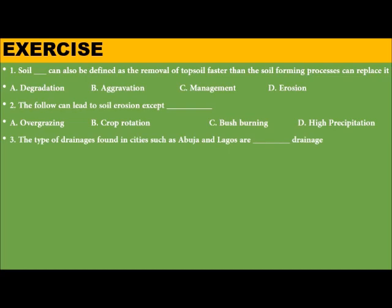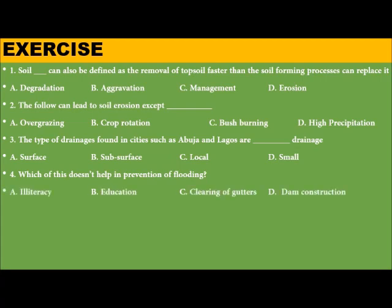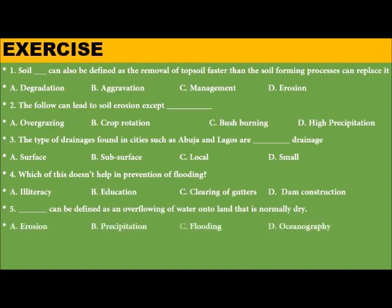Question 3: The type of drainage found in cities such as Abuja and Lagos is dash drainage. A. Surface. B. Subsurface. C. Local. D. Smog. Question 4: Which of these does not help in prevention of flooding? A. Illiteracy. B. Education. C. Clearing of gutters. D. Dam construction. Question 5: Dash can be defined as an overflowing of water onto the land that is normally dry. A. Erosion. B. Precipitation. C. Flooding. D. Oceanography.